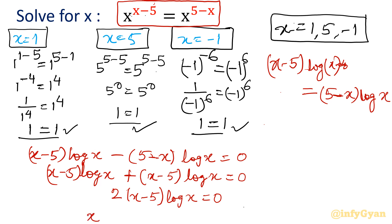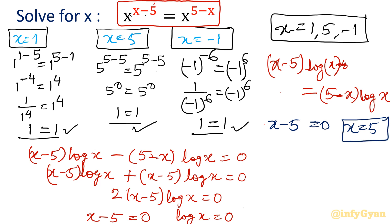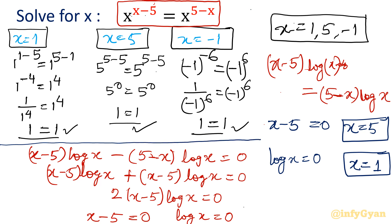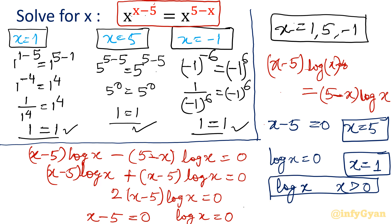This gives x−5 = 0 or log x = 0. From x−5 = 0: x = 5. From log x = 0: x = 10^0 = 1. So the logarithmic method gives only two solutions, because log x is defined only for positive x, and log of a negative number is not defined. That is why x = −1 is eliminated in this method.